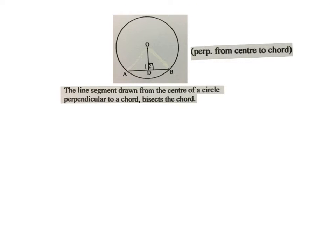The first theorem says, the line segment drawn from the center of a circle, perpendicular to the chord, bisects the chord. You should have that now. The abbreviation we'll use, perpendicular from center to chord.